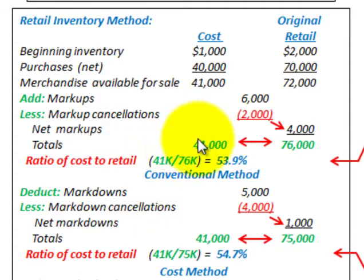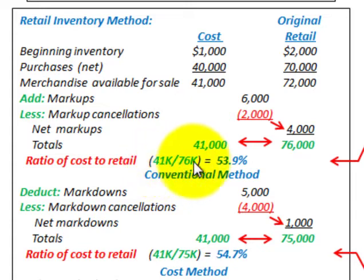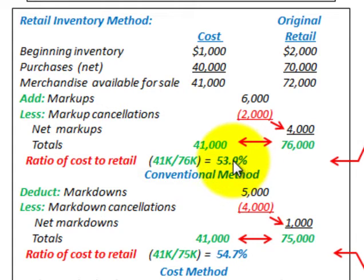For the conventional method, our cost was $41,000 and our retail price was $76,000. Taking $41,000 divided by $76,000, we get a cost-to-retail ratio of 53.9%. This is what we use to determine our ending inventory.